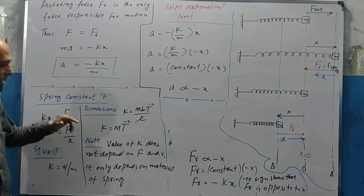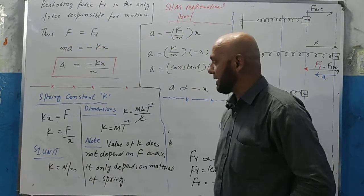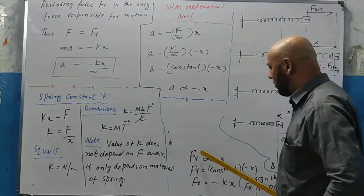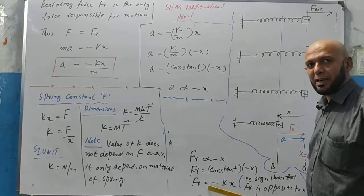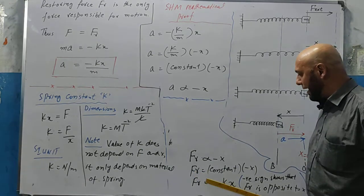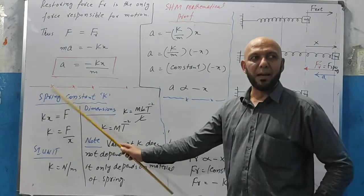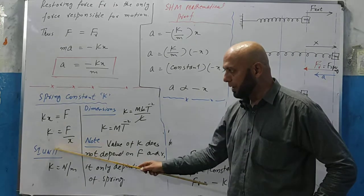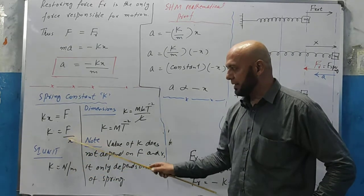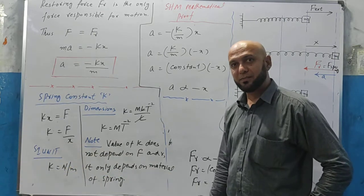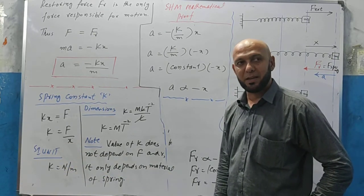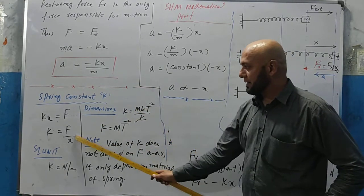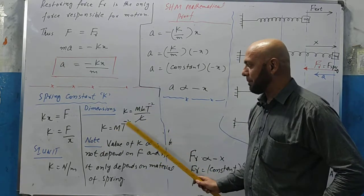Dividing by m gives acceleration a = −kx/m, completing the derivation. Now for MCQs: the spring constant k = F/x. Its unit is Newton per meter (N/m). Its dimensions are force divided by length: MLT⁻² / L = MT⁻².